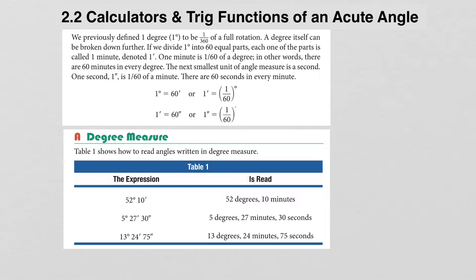You can break it down even further. The next smallest unit of angle measure is a second, denoted with a double prime symbol. A second is 1/60th of a minute, so there are 60 seconds in every minute. To summarize: 1 degree equals 60 minutes, or 1 minute equals 1/60th of a degree; and 1 minute equals 60 seconds, or 1 second equals 1/60th of a minute.